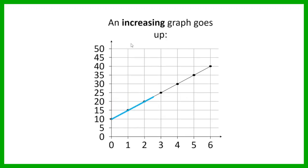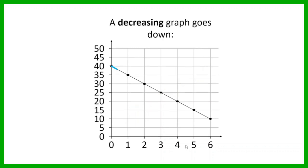The next one is an increasing graph. If a graph is increasing, that means as we go from left to right, the graph is going upwards — the dependent variable is increasing as the independent variable increases. Whereas if we have a decreasing graph, it's the opposite — it is going downwards as we go from left to right, so the dependent variable is decreasing as the independent variable increases.